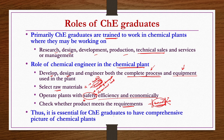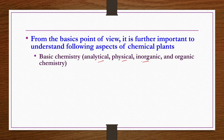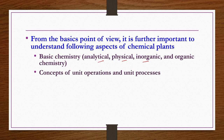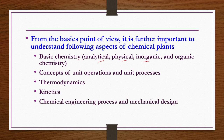It is essential for chemical engineering graduates to have a comprehensive picture of chemical plants. Unlike other industries, chemical industries require knowledge of a wide variety of subjects including basic chemistry — analytical, physical, inorganic, and organic — concepts of unit operations and unit processes, thermodynamics, kinetics, chemical engineering process design, and mechanical design.